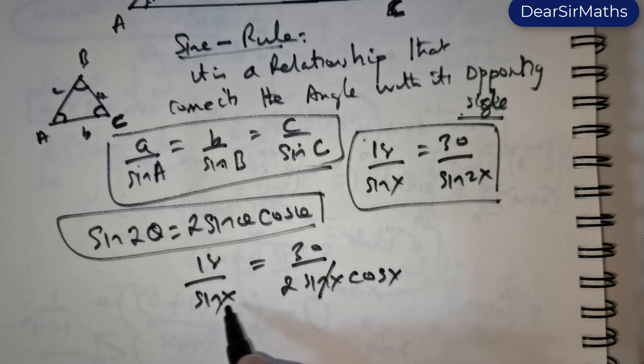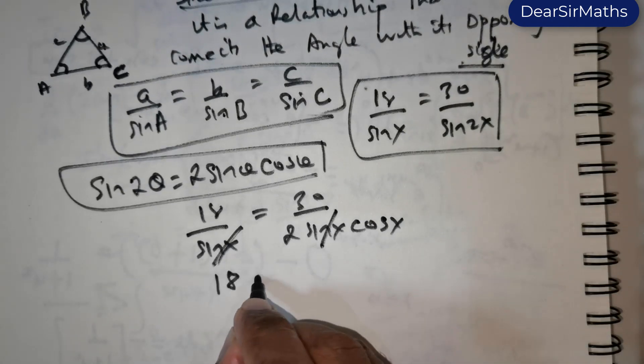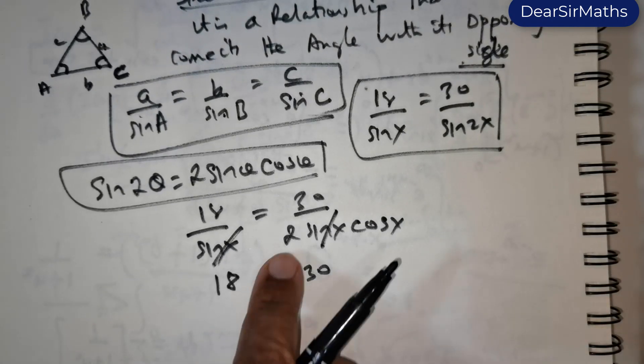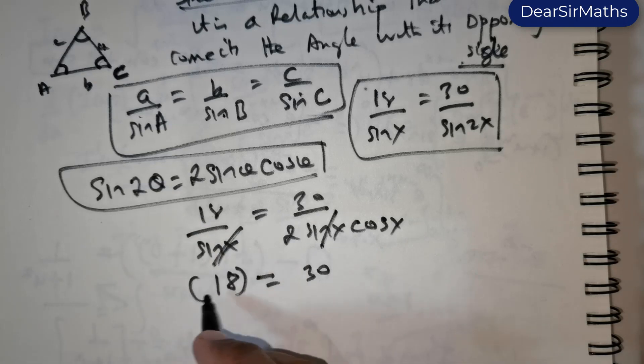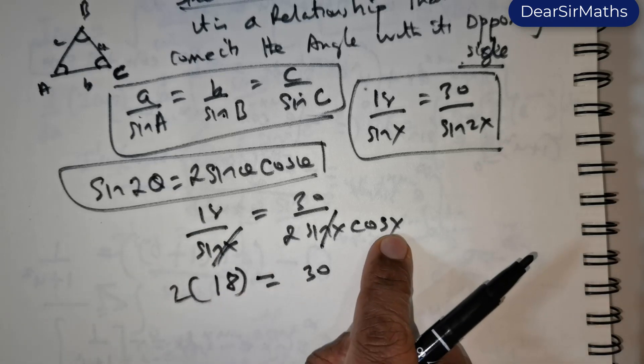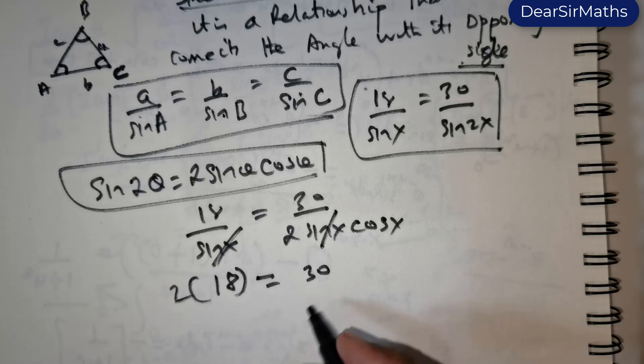Clearly sin x, sin x can be cancelled, giving me 18 equals 30. There is a 2 here—cross multiply that—and you have cos x. You can also cross multiply that cos x, but for the time being let us have that over here.